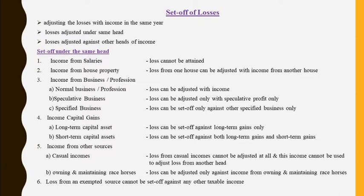Speculative business loss can be adjusted only with speculative profit only — it cannot be adjusted with any other income. For a specified business, just like speculative business, if there is a loss, it can be adjusted only against another specified business profit. To repeat: for normal business activity or normal profession, if there is a loss, that loss can be adjusted with any other income within the head. However, for speculative business or specified business, if you have a loss, you can adjust it only from that specific activity.